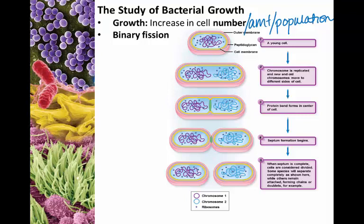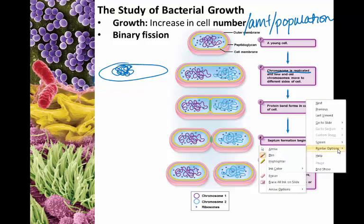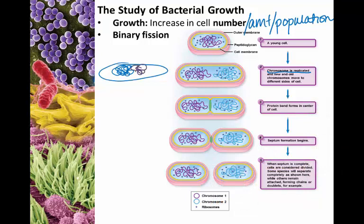Bacterial growth is dependent upon the bacterial cell division process of binary fission. This is the simplest version of cell division. What we start with is a young cell. No matter what type of cell division you are doing, step one is always going to be replicating the DNA, so the chromosome is doubled. In order to separate the pieces of DNA, the chromosomes actually attach themselves to the cell membrane, and then as the cell itself gets larger, the membrane expands and the chromosomes are moved apart.